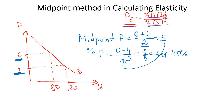The percentage change in price from 6 to 4, using the midpoint method — not the classical method — is equal to 40%. Now we know this variable: the percentage change in price. Next, we need to find the percentage change in quantity.